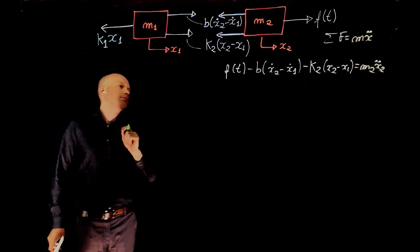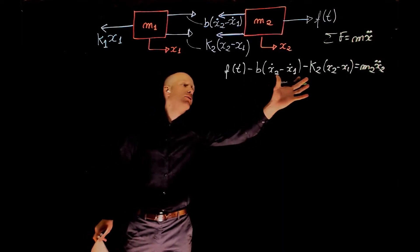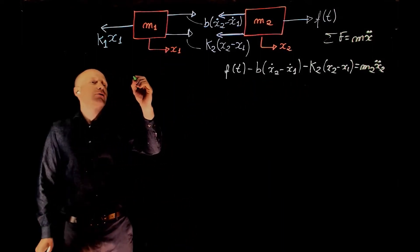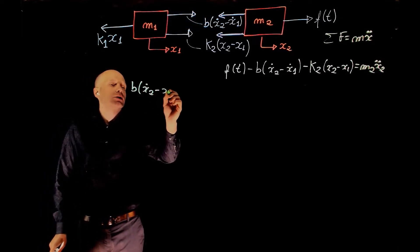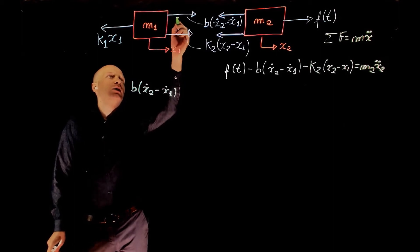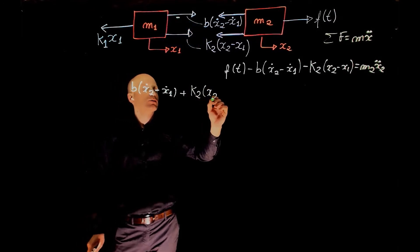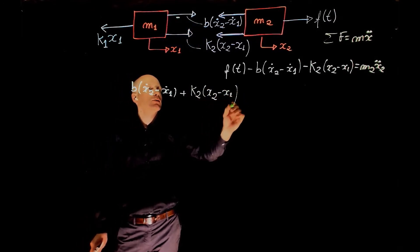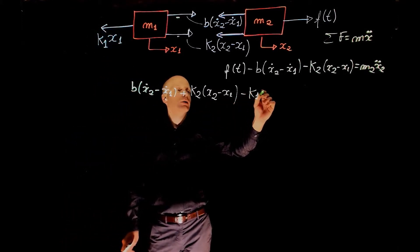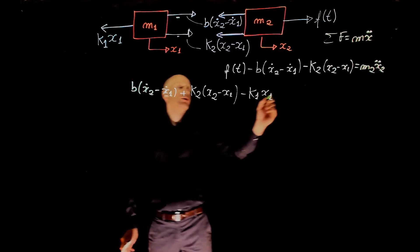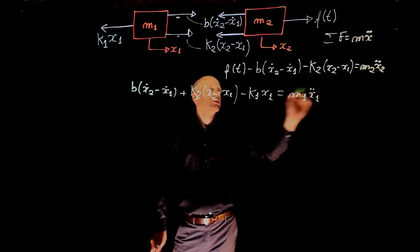If you now look at mass M1, we have the same forces but in the opposite direction, so we have positive b times x2 dot minus x1 dot, plus k2 times x2 minus x1 minus k1 x1 equals M1 x1 double dot.